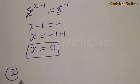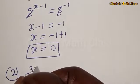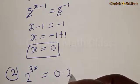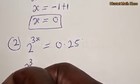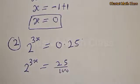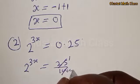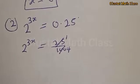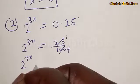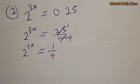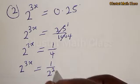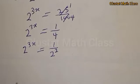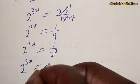Let's look at question number 2: 2 raised to power 3x is equal to 0.25. We have 2 raised to power 3x equal to 25 over 100. Simplifying, 2 raised to power 3x is equal to 1 over 4, which can be expressed as 2 raised to power negative 2. Therefore the equation becomes 2 raised to power 3x equal to 2 raised to power negative 2.